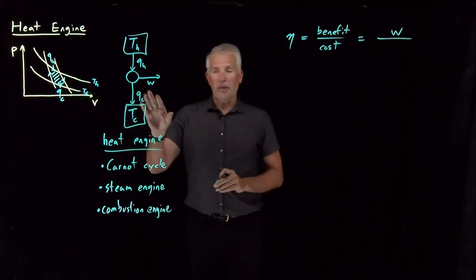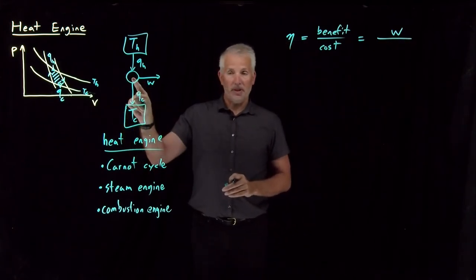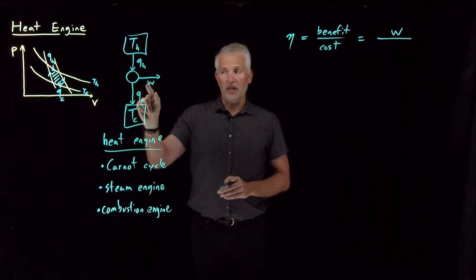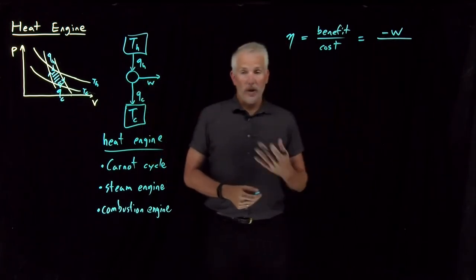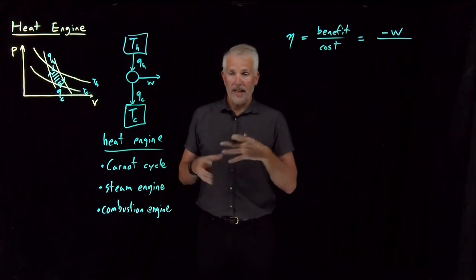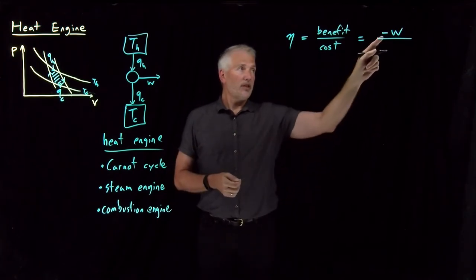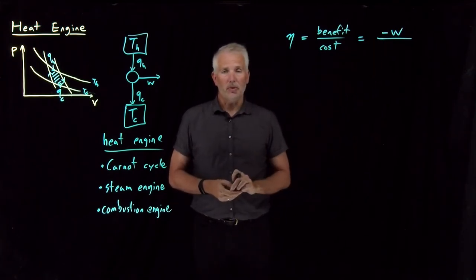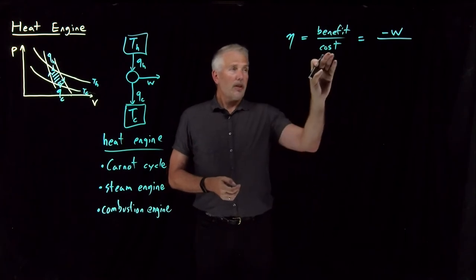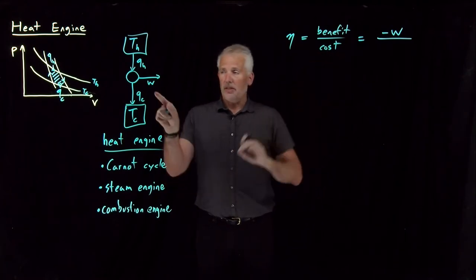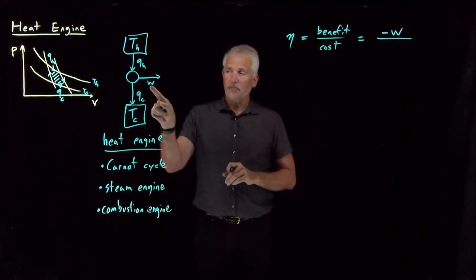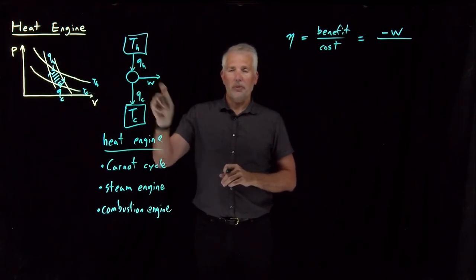So the benefit is W, but we need to keep in mind W, remember, is a negative number. That's from the system's point of view, it has lost energy. W is a negative number. The amount of work that we get out of the process, being outside the system, is negative W. That converts W into a positive number.